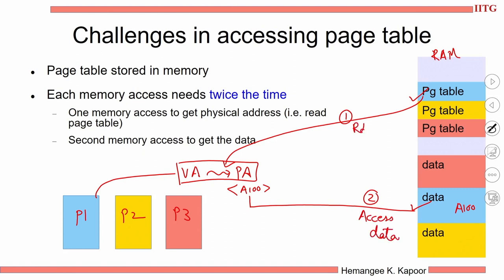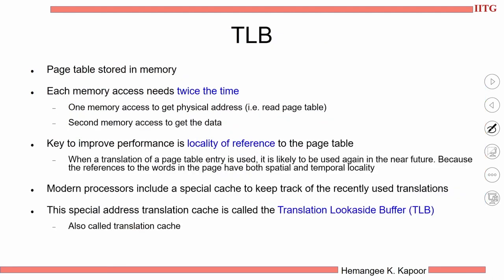Given a virtual address of p1, first go to the page table, read the translation entry, come back, and then go again to the RAM to access the data. We are going to make two trips to the RAM consuming twice the time. How do I improve on these two trips? There is a concept called TLB — the translation look-aside buffer — which saves these two trips to the RAM.